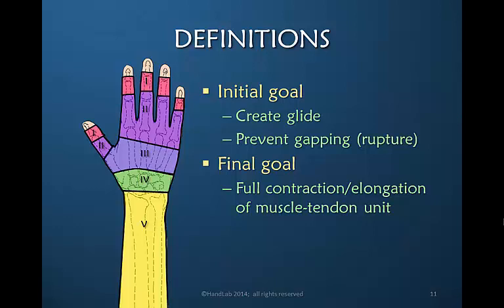Our final goal is full contraction of the muscle-tendon unit with full proximal glide of that tendon, and also full elongation of the muscle-tendon unit when it is relaxed.